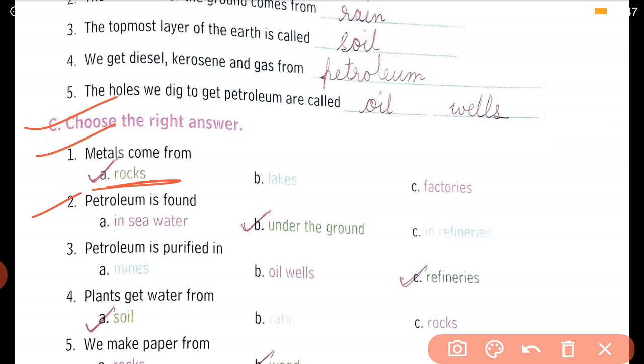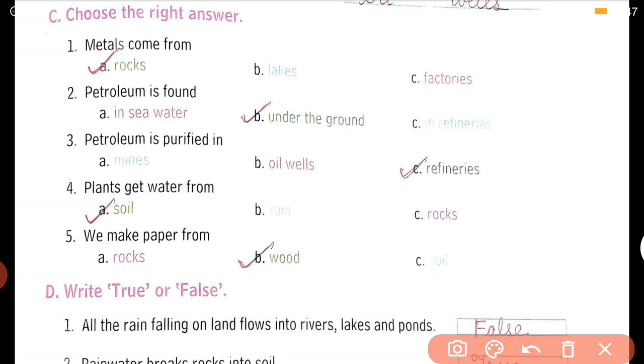Petroleum is purified where? The place where petroleum is purified is known as refineries. Plants get water from where? From the soil. And five, we make paper from what? We all know this, we are reading from class one. Now next is write true and false.